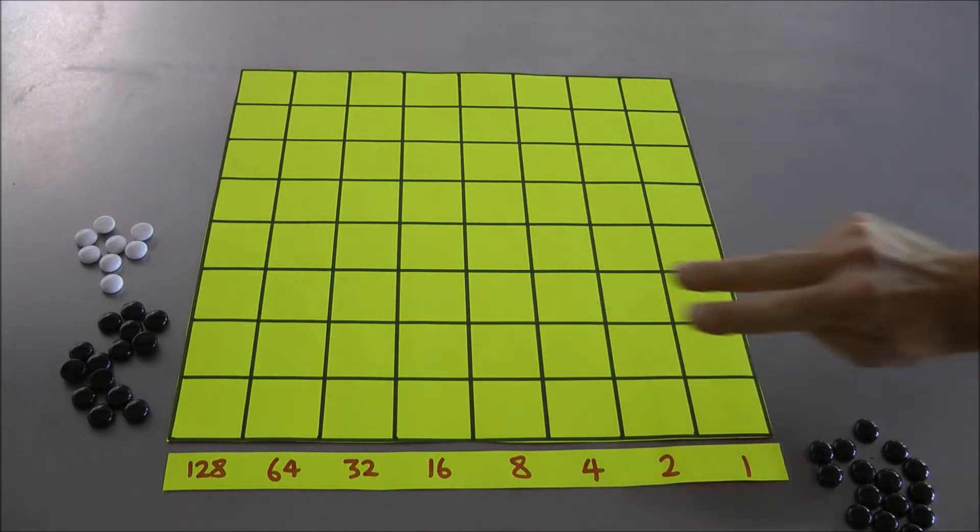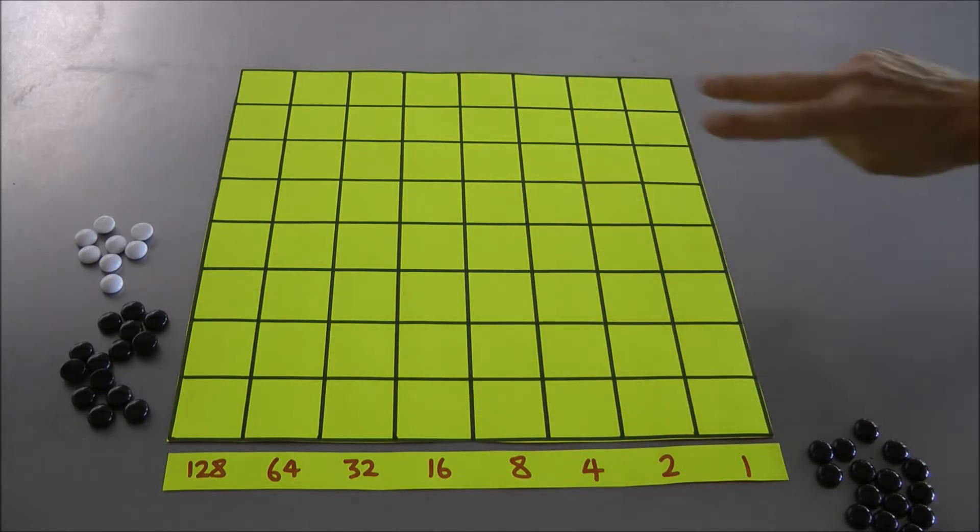Now right now, we think of the checkerboard as a whole bunch of 2-1 machines stacked row by row on top of another, with the columns labelled by the powers of 2: 1, 2, 4, 8 and so on. Great.